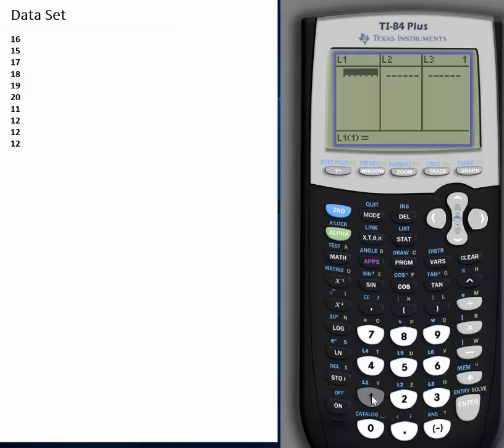Start typing: 16, enter, 15, enter, 17, enter, 18, enter, 19, 20, 11, 12, 12, and 12. Okay, now you can quit - Second, Mode - you quit. Okay, now here's what you do to find the standard deviation and the mean.